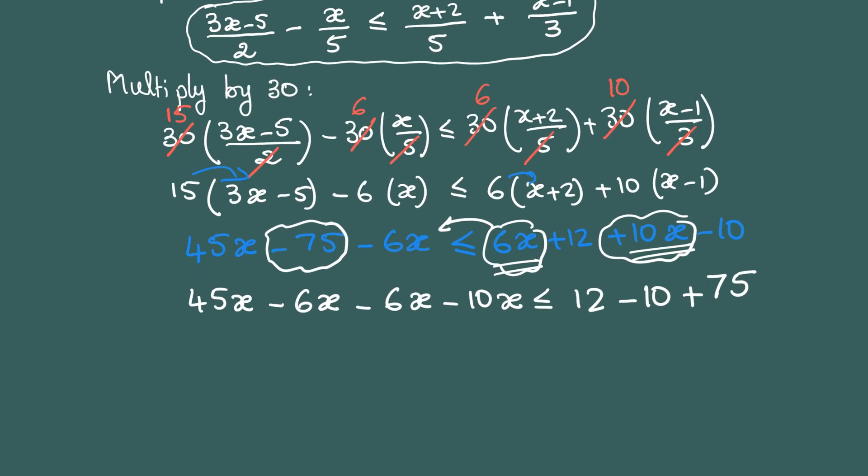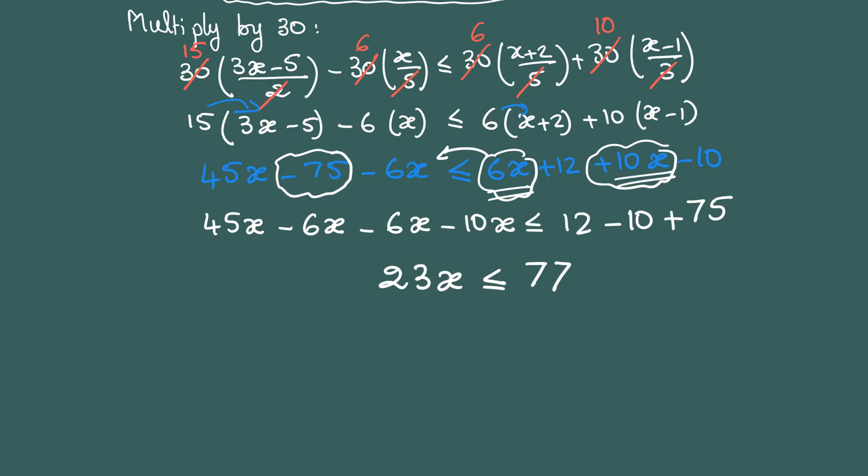So 45 - 6 - 6 - 10 is 23x, and on the other side 12 - 10 is 2 plus 75, so 77. Finally, I want x, so I need to divide both sides by 23.